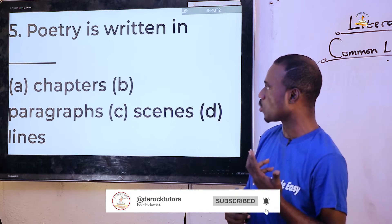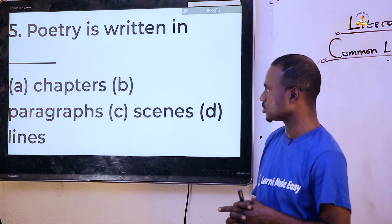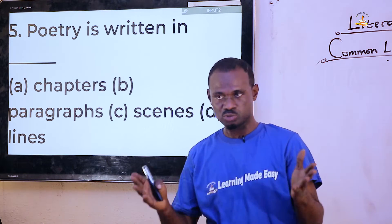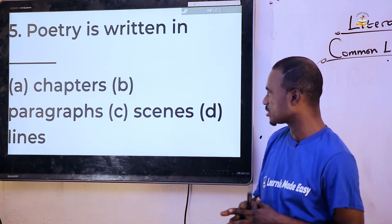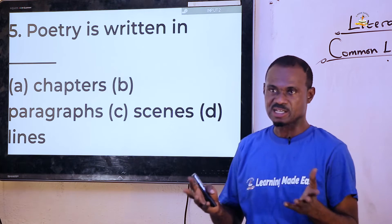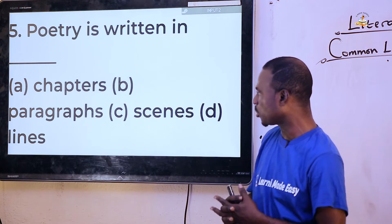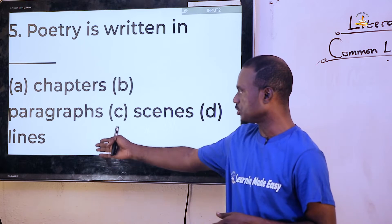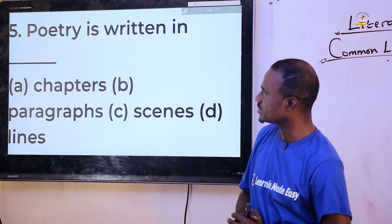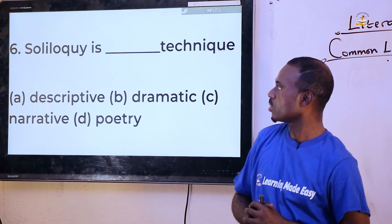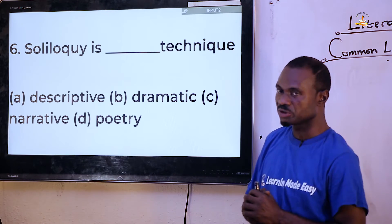Question five: 'Poetry is written in dash.' You can't go for chapters because chapters are for prose, not paragraphs which are for essays, not scenes which are for drama. The correct answer is option D — lines.